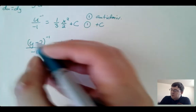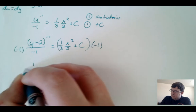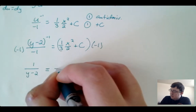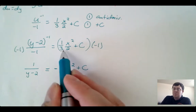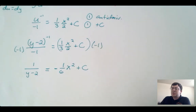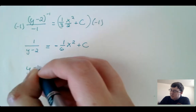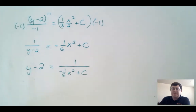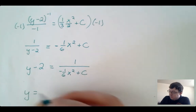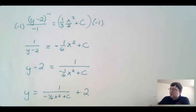To isolate y: multiply both sides by −1 to get 1/(y − 2) = −x²/6 + C (C can absorb the sign). Flip both sides: y − 2 = 1/(−x²/6 + C), so y = 1/(−x²/6 + C) + 2. One point for isolating y.